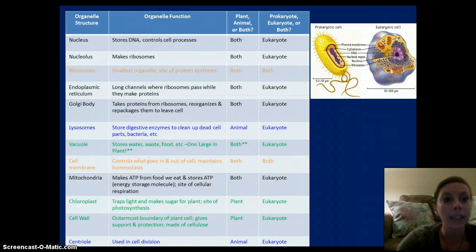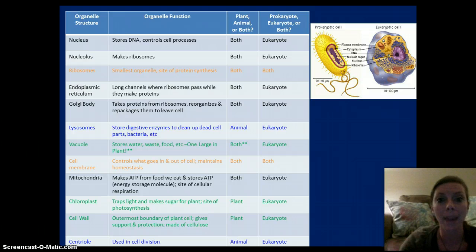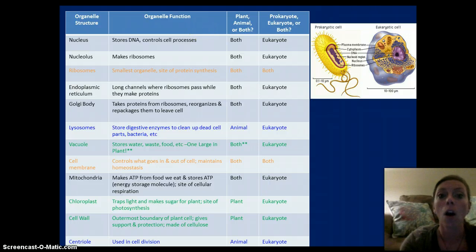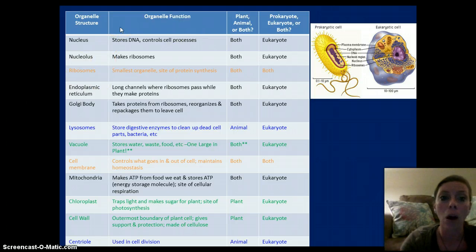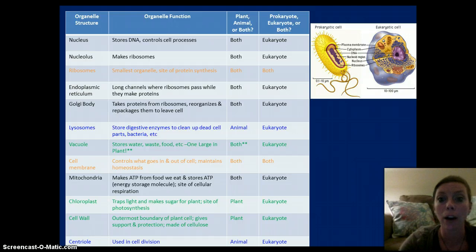So, here is a list of some of the basic cellular structures. We have the nucleus, which is found only in eukaryotic cells — it stores the DNA and controls the processes that occur within the cell. We have the nucleolus, which makes ribosomes and is found only in eukaryotic cells, both plant and animal. We have ribosomes, which are the smallest organelle — tiny little dots that are the site of protein synthesis. They are found in all cells: plant, animal, and prokaryotic. We have the endoplasmic reticulum — smooth ER and rough ER — which are basically a long channel that has ribosomes and makes proteins and lipids, synthesizing products used for cellular processes. They are found in eukaryotic plant and animal cells.